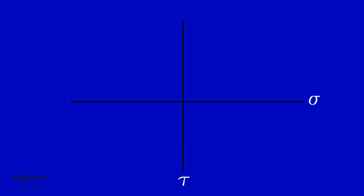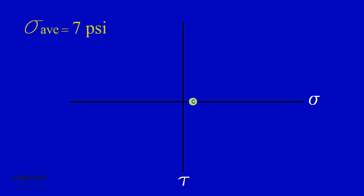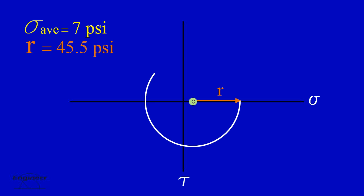Beer and Johnston's text simply specifies positive shear upward, then reverses the shear sign when plotting the x-face on Mohr's Circle. For the example shown here, the angle of rotation, or theta, will be positive in the counter-clockwise direction. When drawing Mohr's Circle, begin by plotting the point for the average stress. We'll call it point C for the center of Mohr's Circle, which is equal to the average normal stress. The radius of the circle equals 45.5 pounds per square inch, so accurately draw the circle.